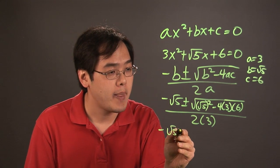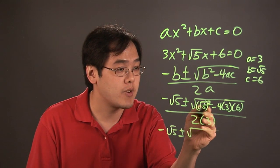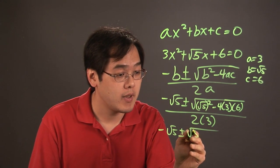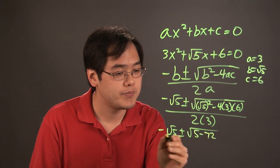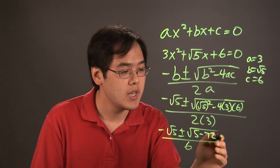You have negative square root of 5 plus or minus, now square root of 5 squared is actually 5, minus 4 times 3 is 12, 12 times 6 is 72, over 6.